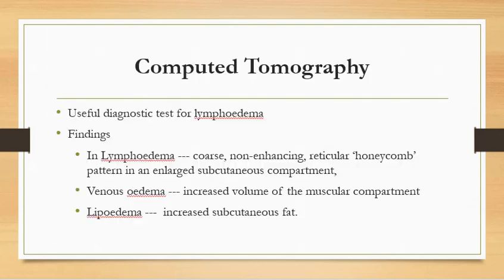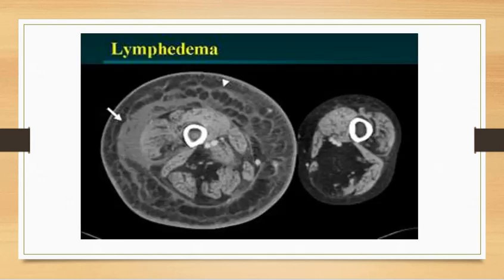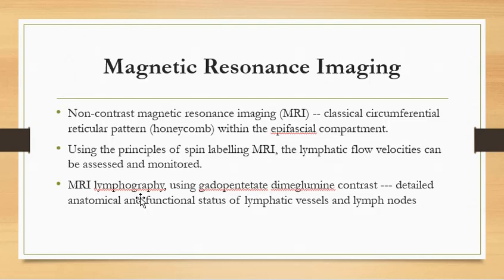CT scan is a useful diagnostic test. In lymphedema, CT findings show a non-enhancing reticular honeycomb pattern. In venous edema, there is increased volume of the muscular compartment. In lipoedema, increased subcutaneous fat is seen. The honeycomb appearance of lymphatics is clearly demonstrated by the arrow in the CT scan image.